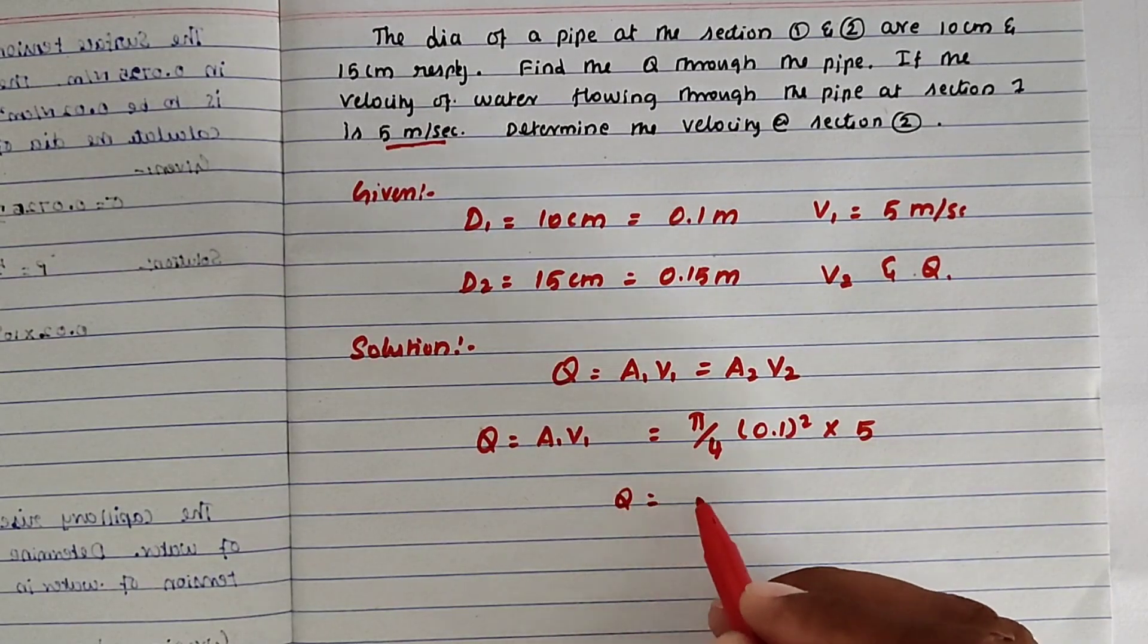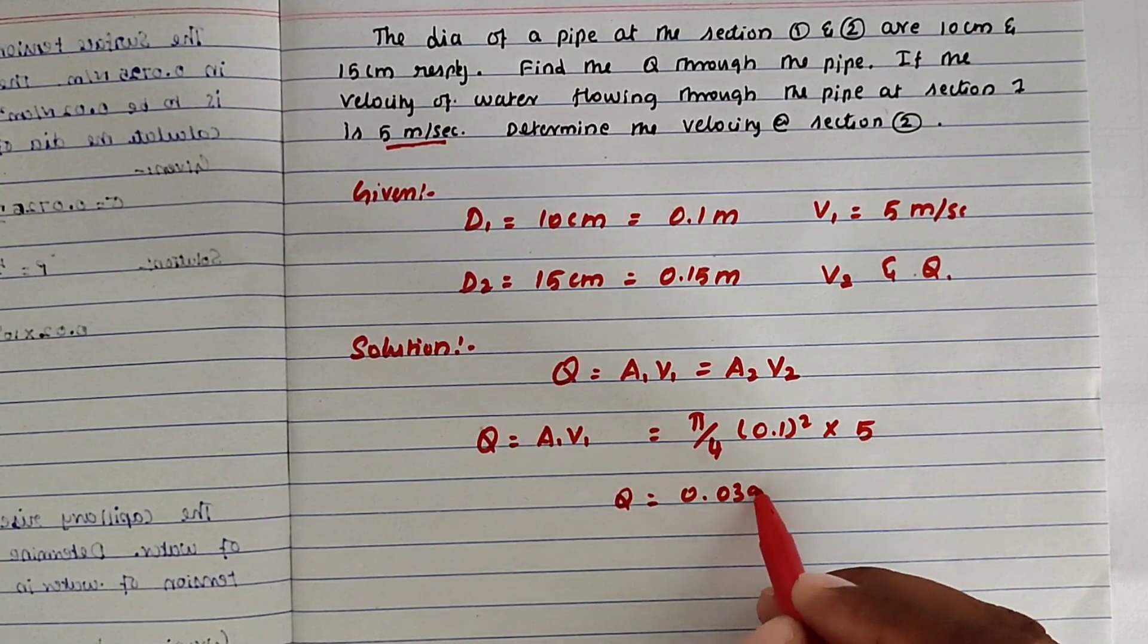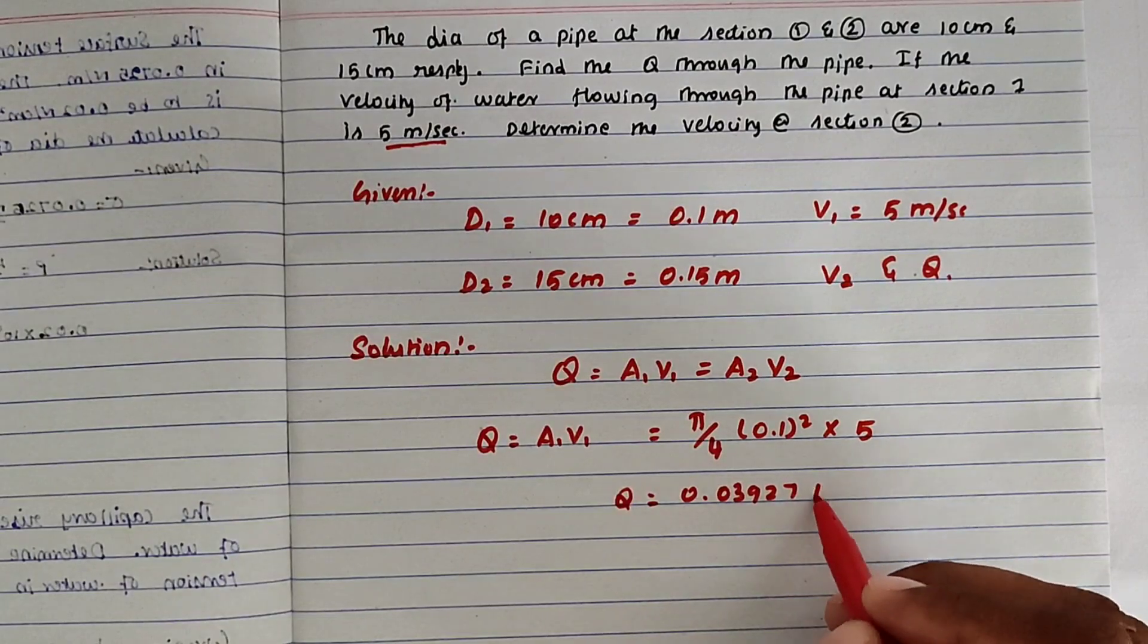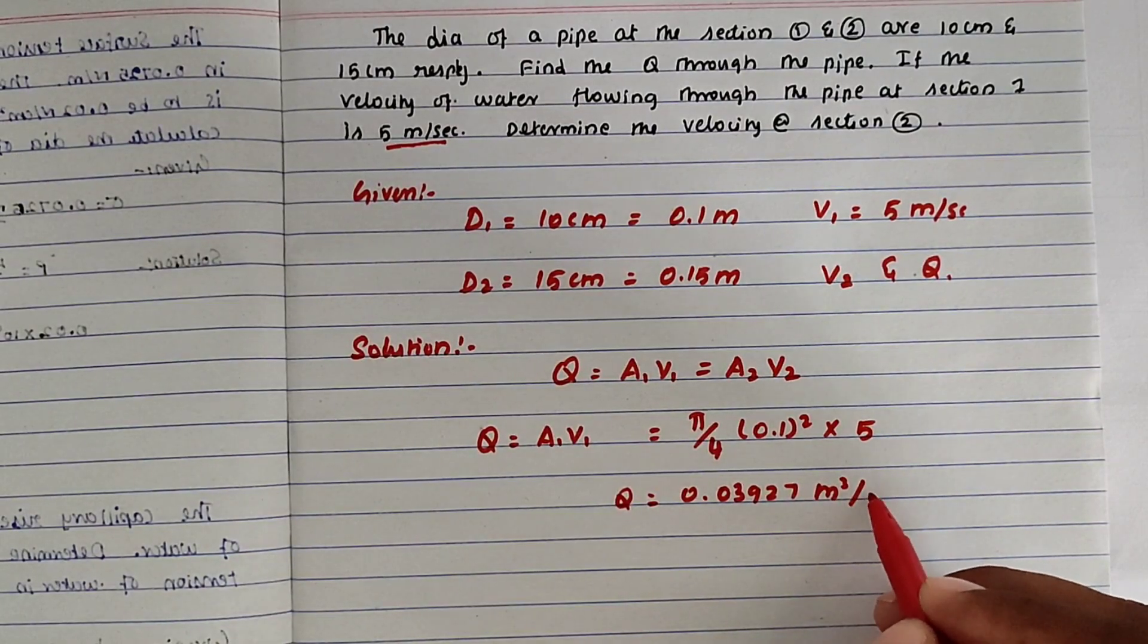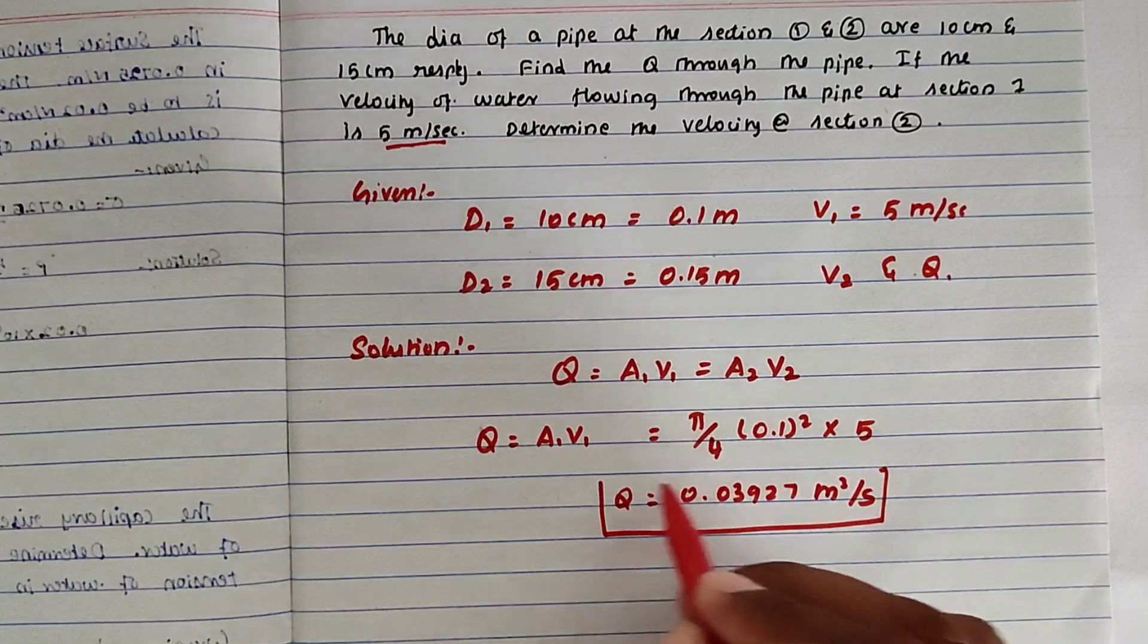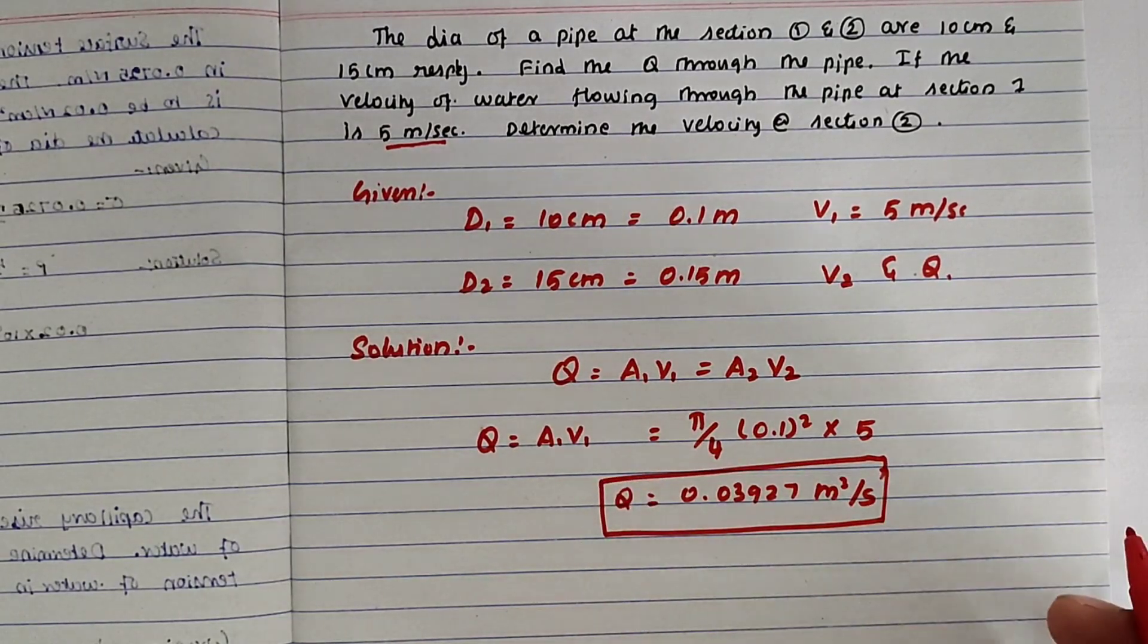Q equals 0.03927 meter cube per second. This is the discharge value.